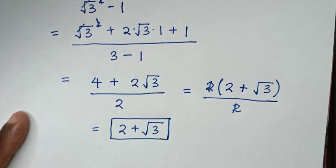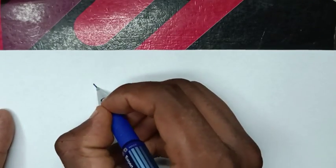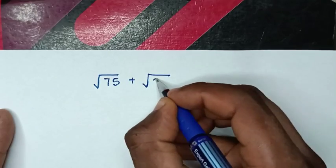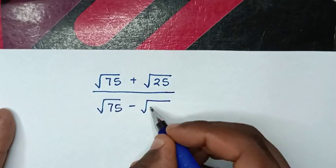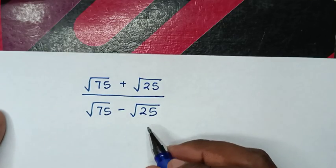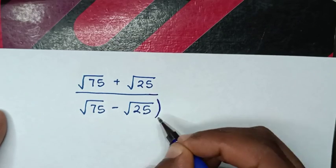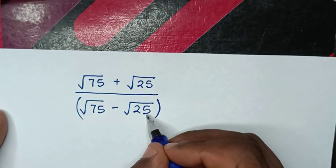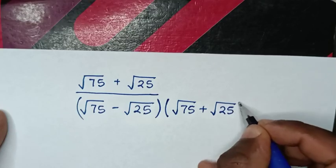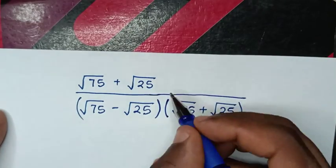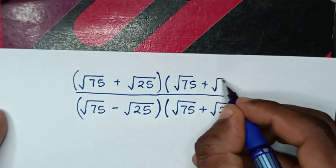Now to solve this problem in the second method. Our problem was square root of 75 plus square root of 25 over square root of 75 minus square root of 25. To simplify, we rationalize the denominator first. Since the denominator is square root of 75 minus square root of 25, we multiply by square root of 75 plus square root of 25 in both the denominator and the numerator.